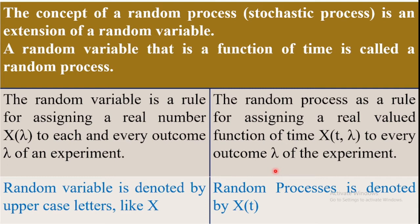That is the definition of a random process. One more definition of a random process: the random process is a rule for assigning a real-valued function of time to every outcome of the random experiment.